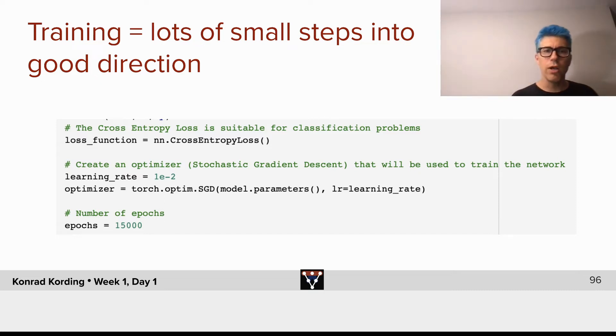So, let's look at training. What's going to happen during training? What is training? In a deep learning system, training is basically we do lots of small changes of the weights into the direction that makes things better.